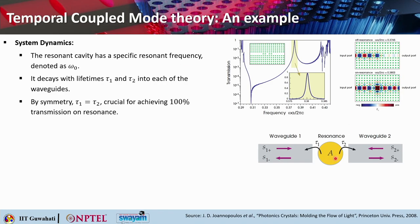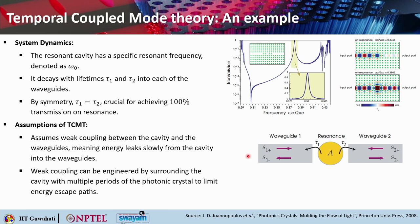The resonant cavity has a specific resonant frequency omega_0, and the cavity decays with lifetime tau_1 and tau_2 into each of the waveguides. Because the waveguides are symmetrical, tau_1 and tau_2 are also symmetrical, which is crucial for achieving 100% transmission on resonance. There are certain assumptions before applying TCMT: you must assume weak coupling between the cavity and the waveguides, meaning energy leaks slowly from the cavity into the waveguides. This weak coupling can be engineered by surrounding the cavity with multiple periods of the photonic crystal.